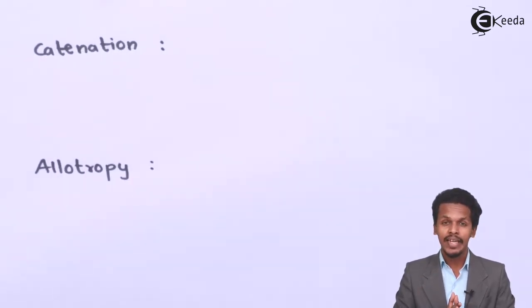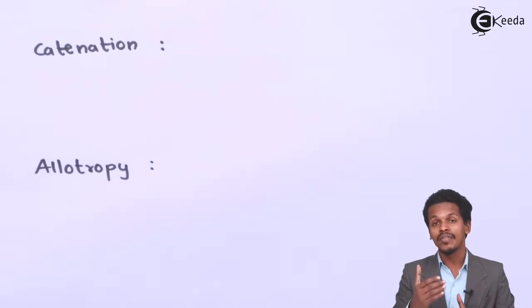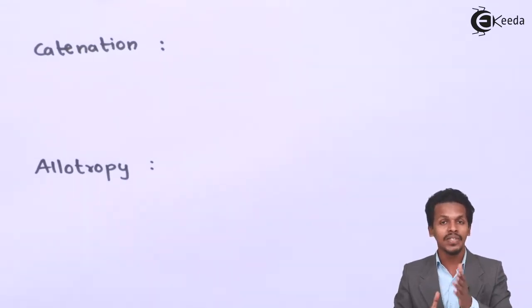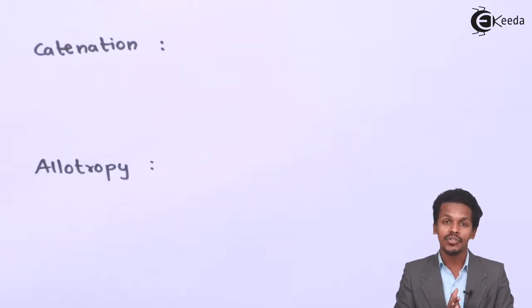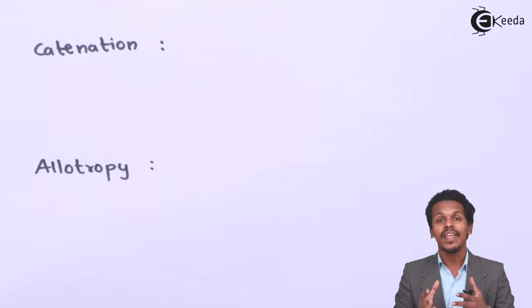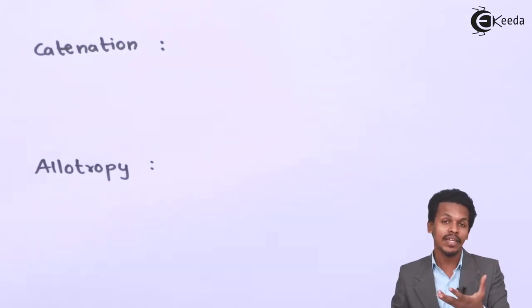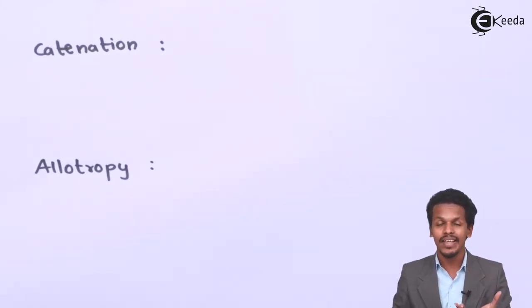The next point is catenation. Oxygen has lesser catenation compared to sulfur, and moving down from sulfur to polonium this property of catenation decreases. Sulfur is the only element in group 16 which has a strong tendency to show catenation, reaching up to S8 — the puckered ring structure consisting of 8 sulfur atoms. Oxygen can form a maximum of H2O2 where one oxygen attaches to another, or O3 (ozone) with 3 oxygen atoms, which is far less than sulfur's catenation ability.